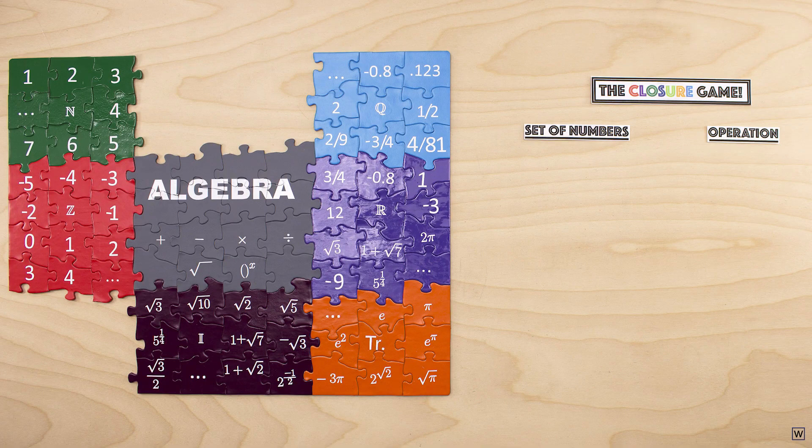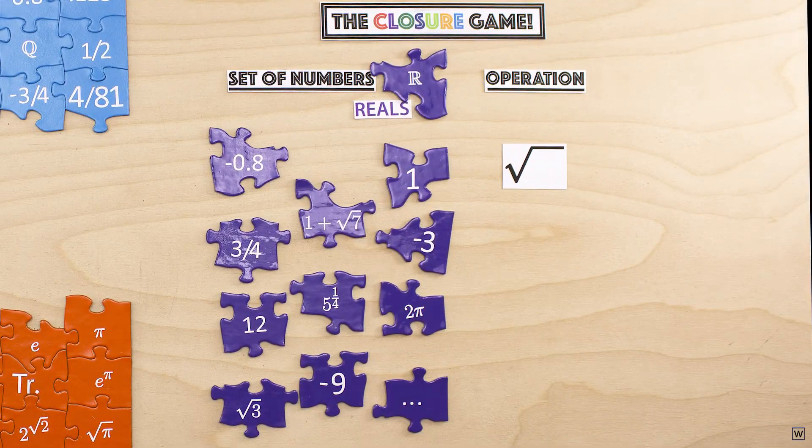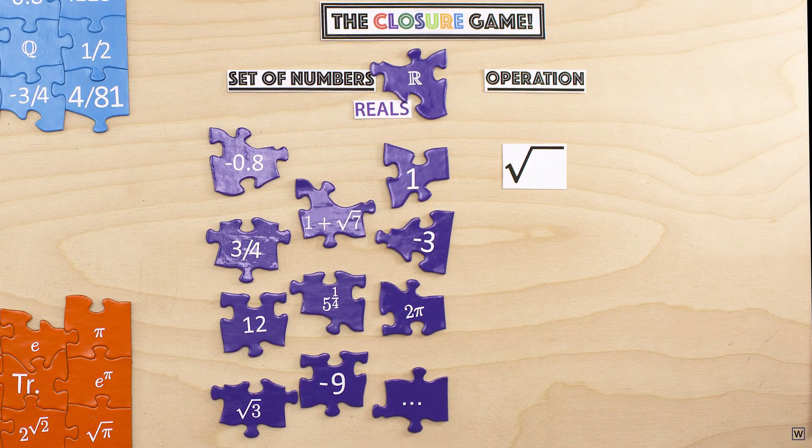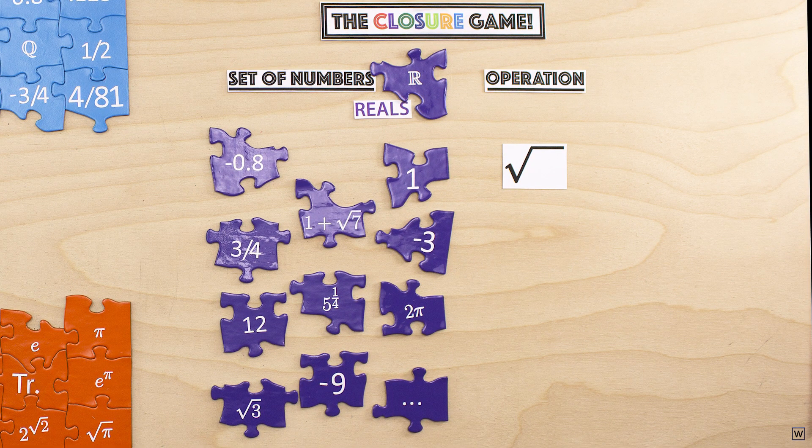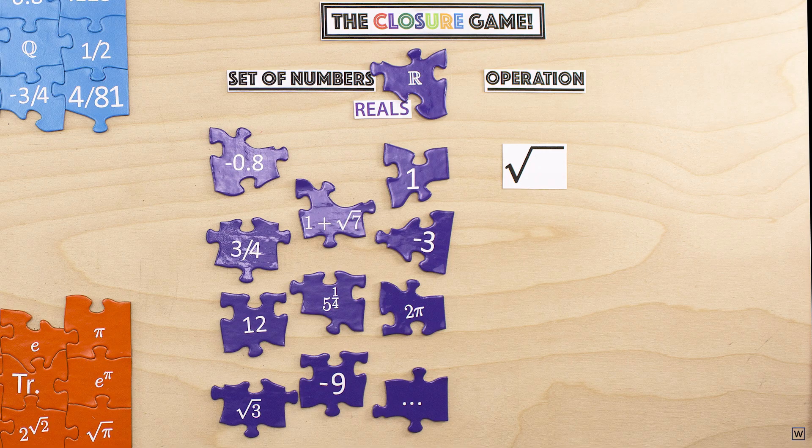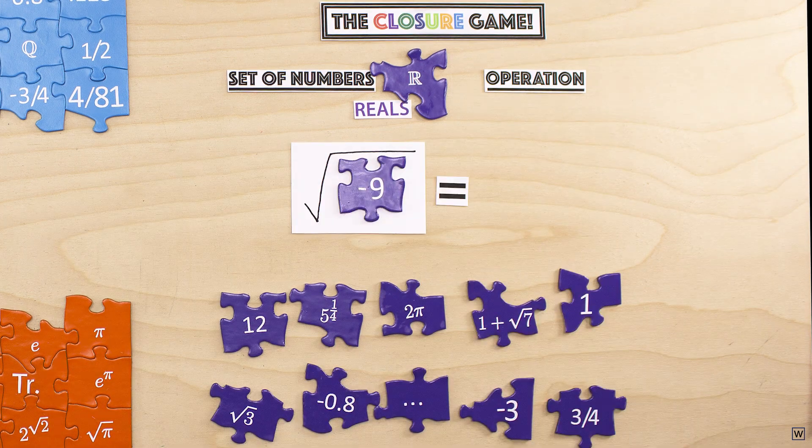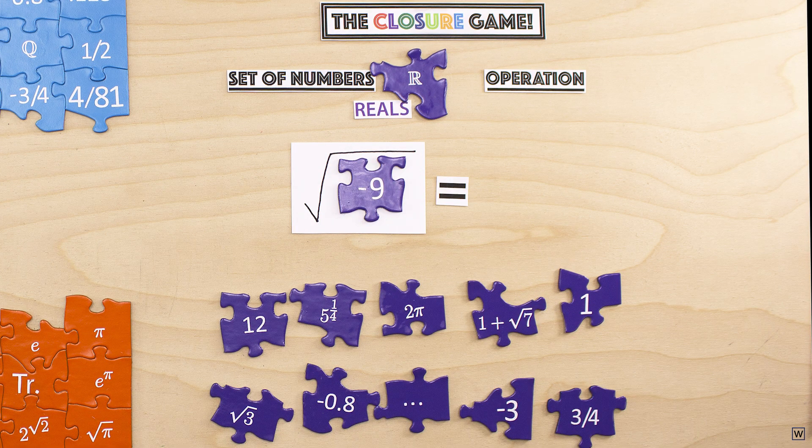Let's play our game one more time. Our set is now the real numbers, and our operation is taking roots. Do we have closure? Are there any real numbers that when we take some root yield a result that is not a real number? The answer is that despite all the types of numbers we've included along the way, we're still missing something. We can write an expression only using real numbers and roots, for example the square root of negative 9, that has no solution in the real numbers.